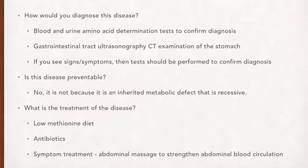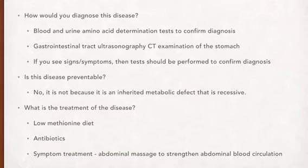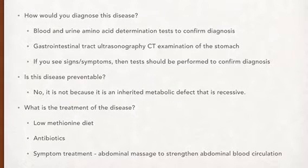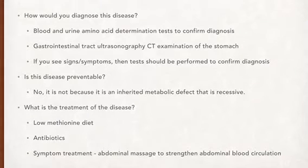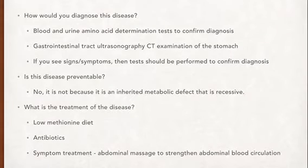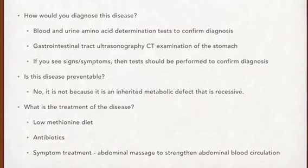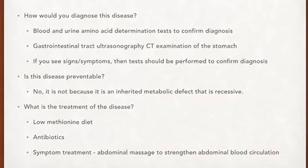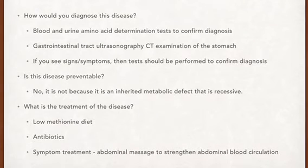What is the treatment of this rare disease? Some treatments include a low methionine diet. Because this disease is a malabsorption problem, all you'd have to do is restrict methionine within the diet and you'd reduce the signs and symptoms of the disease. Another treatment would be the use of antibiotics and also symptom treatment, such as abdominal massage to strengthen abdominal blood circulation.